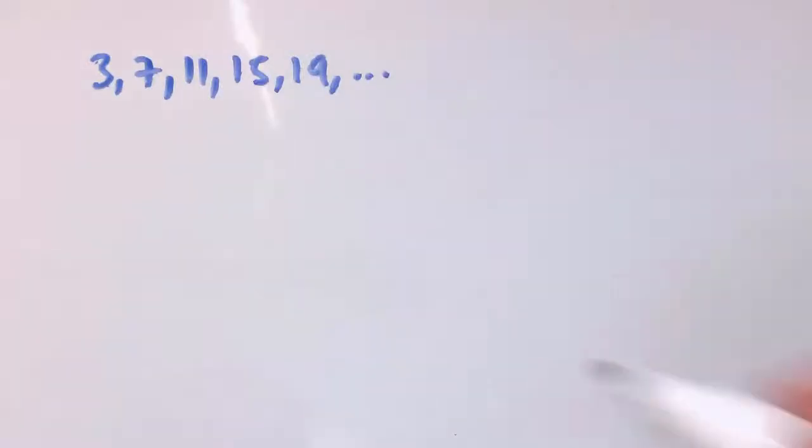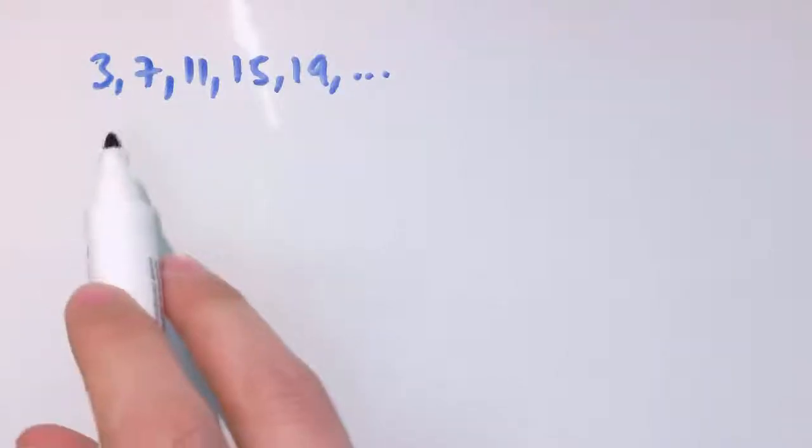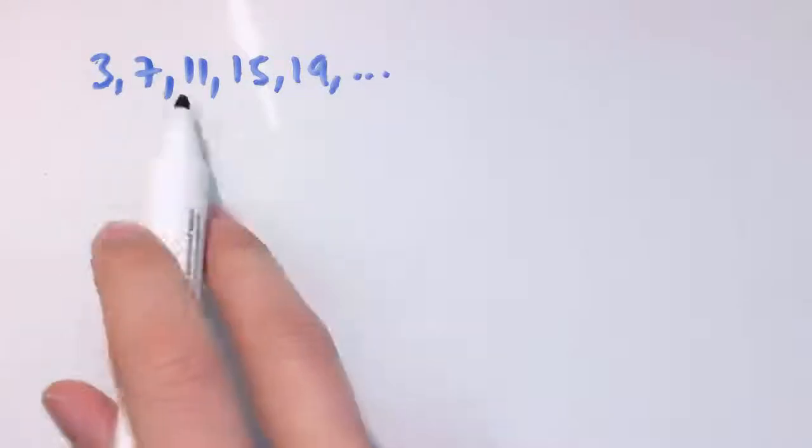In this video we're going to look at the general form for an arithmetic progression, which is really useful. Watch the video with numerical examples first. For example, this one's an arithmetic progression: 3, 7, 11, 15, 19.